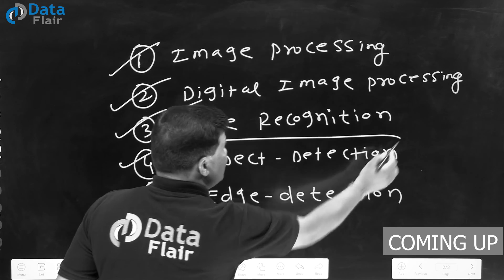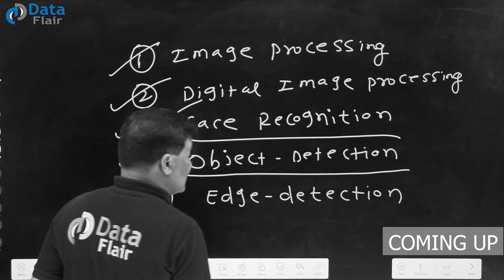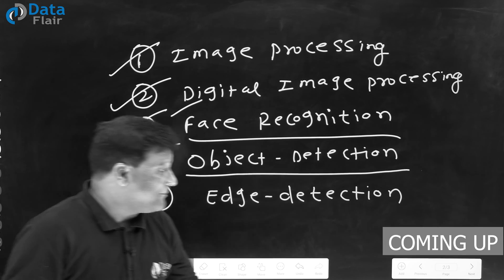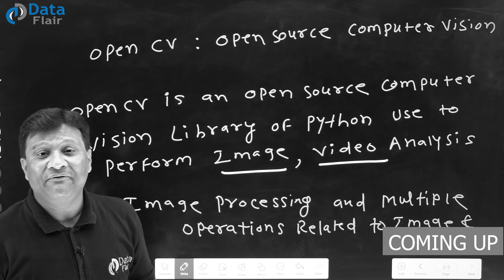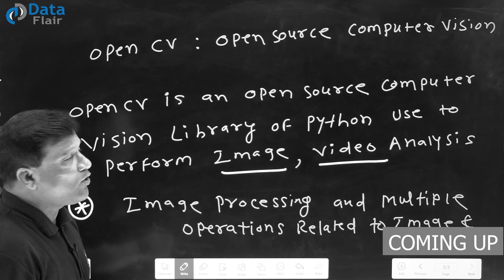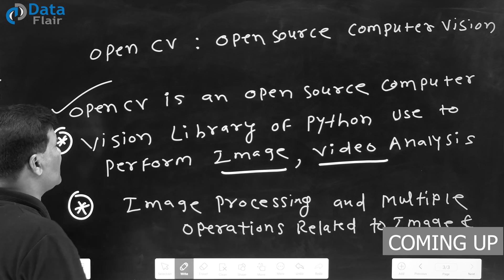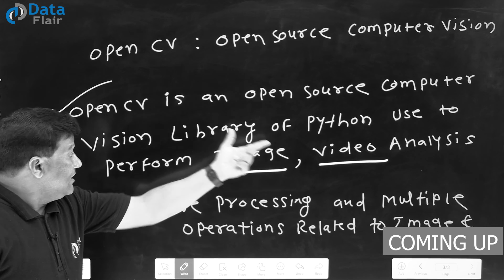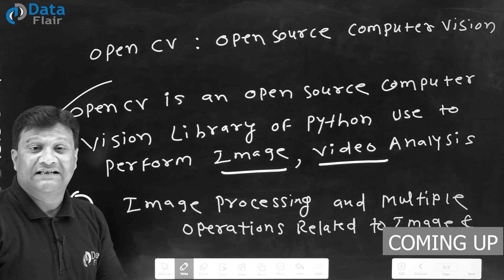OpenCV is used for face recognition systems and object detection systems. If we define OpenCV library in a simple way, OpenCV is an open source computer vision library of Python used to perform image and video analysis.